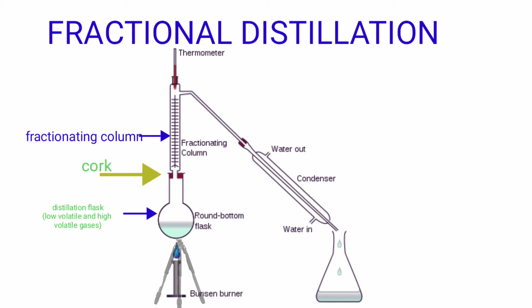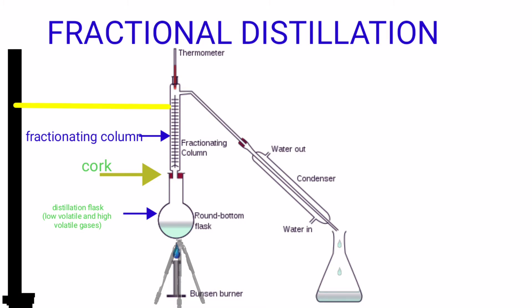It is tightened by using a cork. The cork prevents the leaking of gases. A supporting rod is used to support the fractionating column. At the top of the fractionating column, a thermometer is inserted.